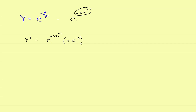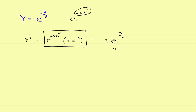Now it's possible if you were checking answers they may rewrite this. You can move the three out in front, then here's e, you've got the negative three, take the x to the negative one and move it back down to the denominator, then take this x to the negative two and move it below the entire thing — it'll turn into x to the positive two. But for what we're going to do, this right here will be just fine. So it's just the original e-function times the derivative of its exponent.